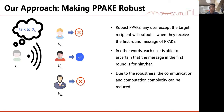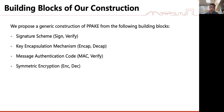The key idea of our construction is to make PPAKE robust. We say a PPAKE protocol is robust if each user can make sure that the first-round message is for him or her. With robustness, the communication and computation complexity can be reduced. We propose a generic construction from a signature scheme, a CAM, a MAC, and symmetric encryption.